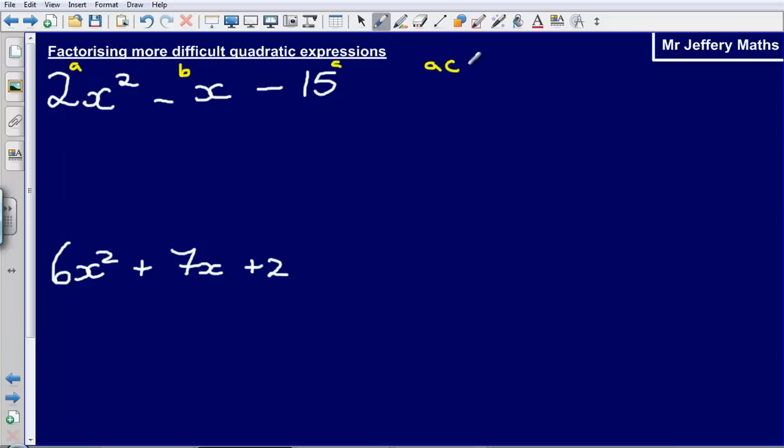I need to calculate what ac is equal to. ac is going to give me minus 30 and b is going to give me minus 1.